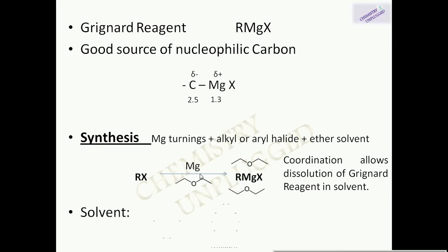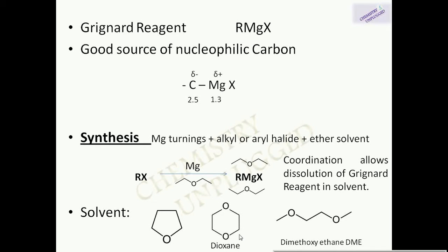This coordination allows the Grignard reagent to dissolve in the solvent. Instead of diethyl ether, we can also use tetrahydrofuran (THF) or dimethoxyethane (DME). When forming a Grignard reagent, the organic halide should not contain acidic hydrogen or a functional group with acidic hydrogen, such as OH, NH, SH, or COOH.